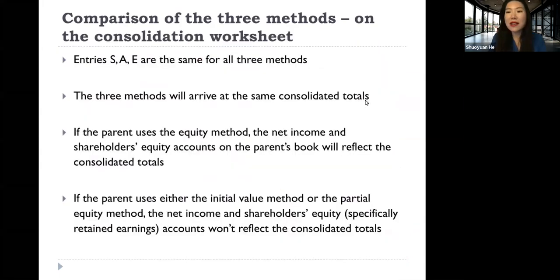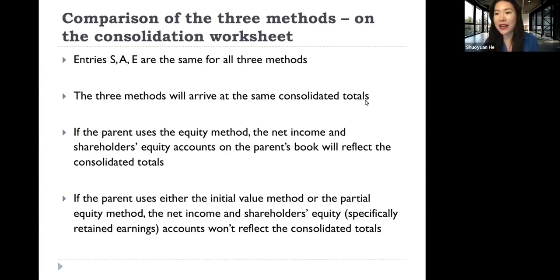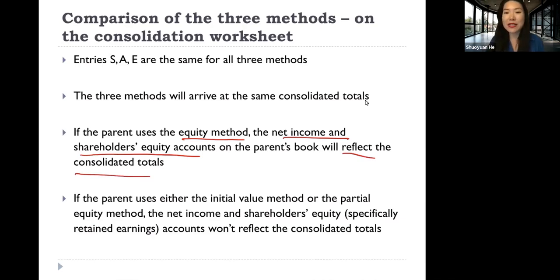Now let's look at the consolidation worksheet and see what the differences are. Entries S, A, and E are the same for all three methods. All three methods will arrive at the same semi-consolidated totals. Under the equity method, the net income and shareholders' equity on the parent book will reflect the consolidated total, whereas under the other methods, they won't.